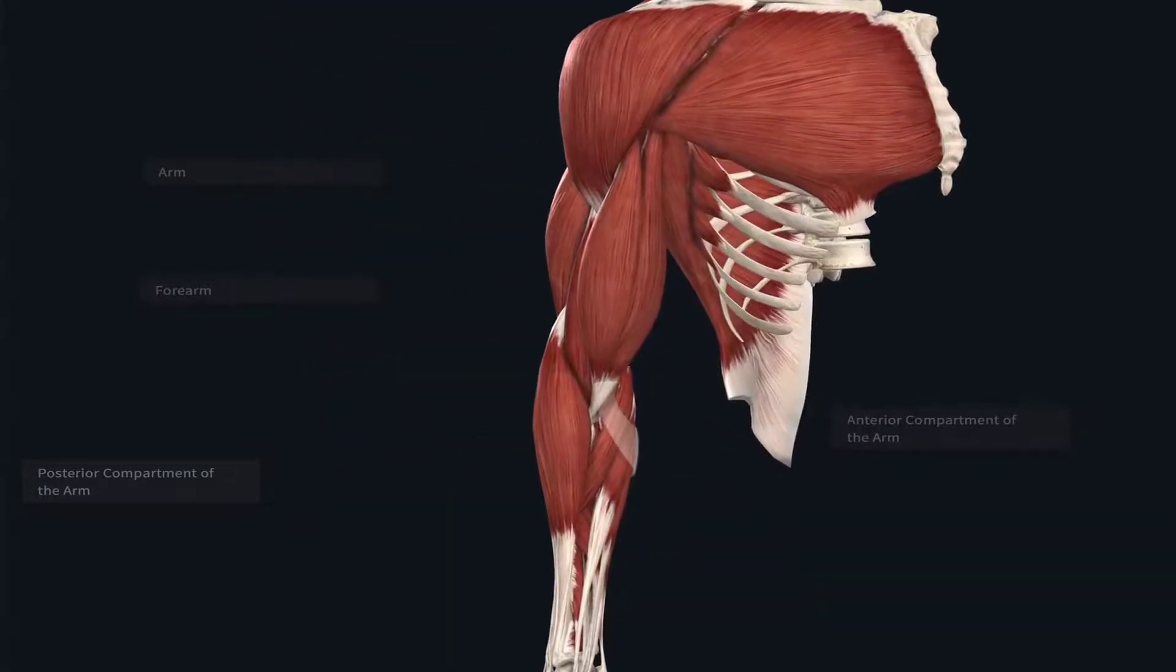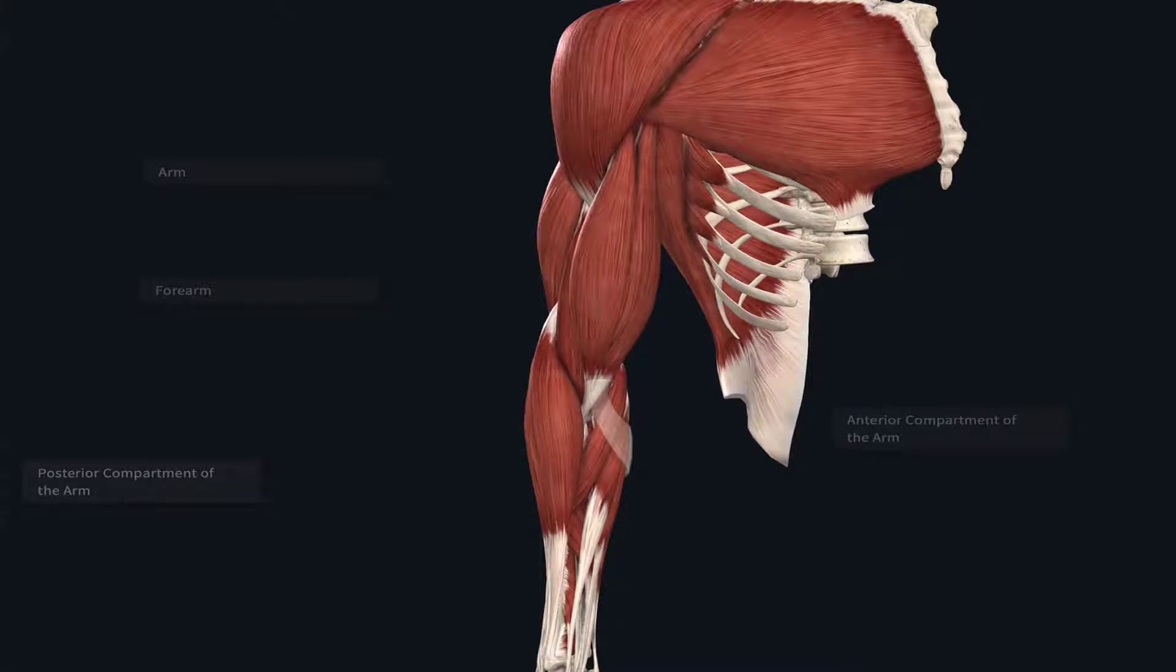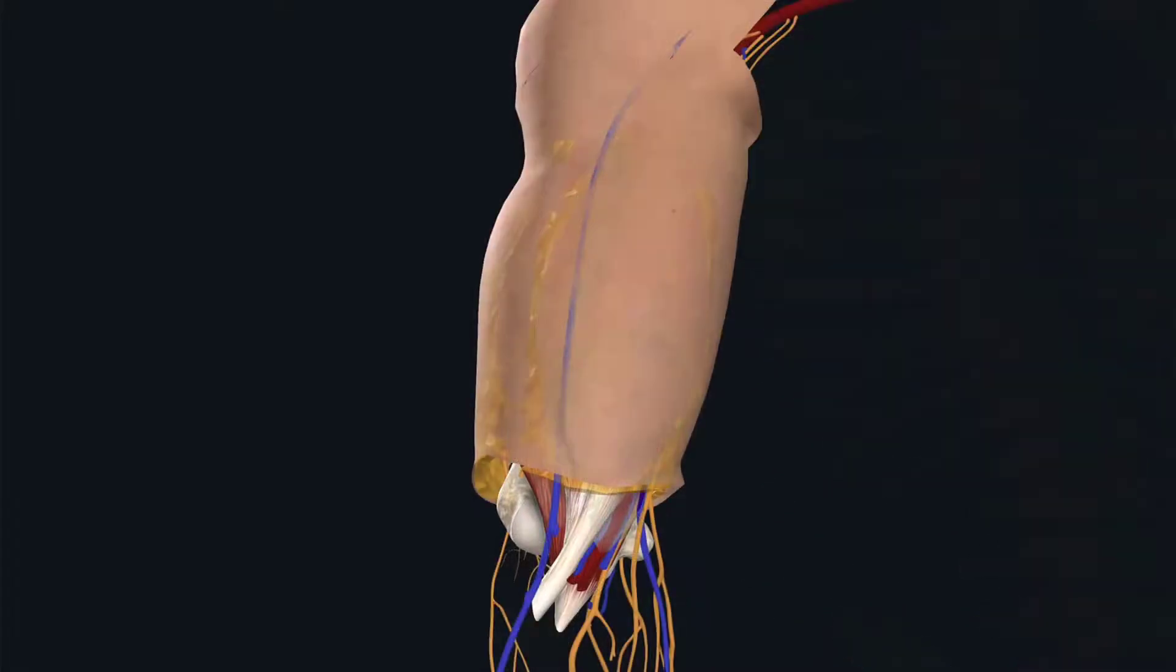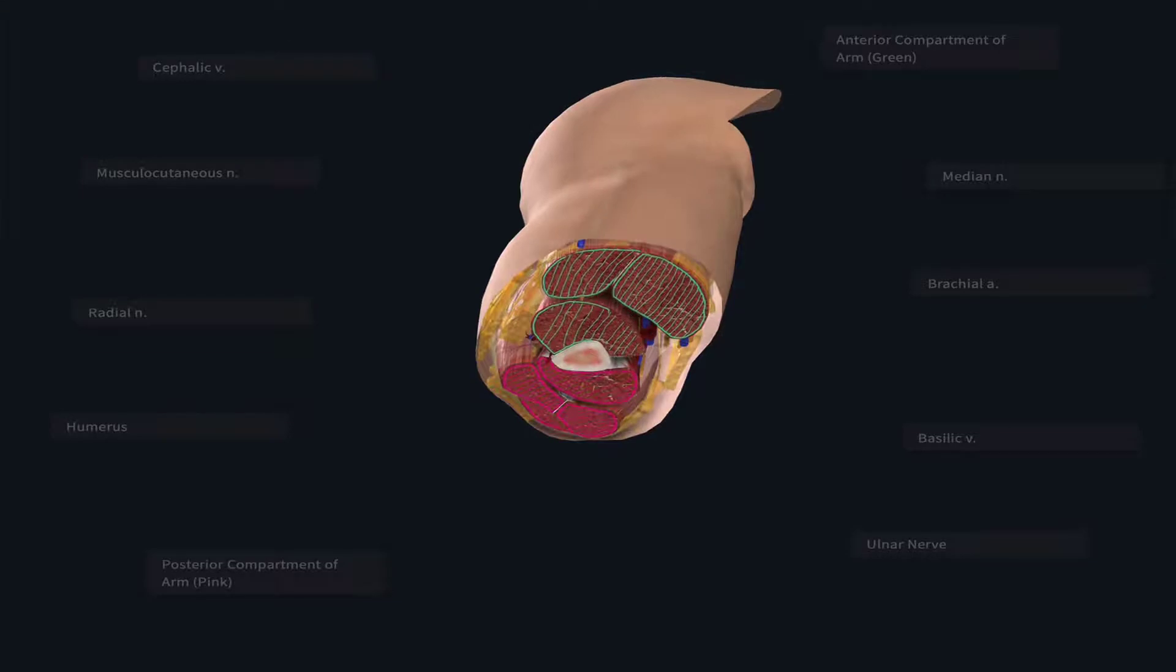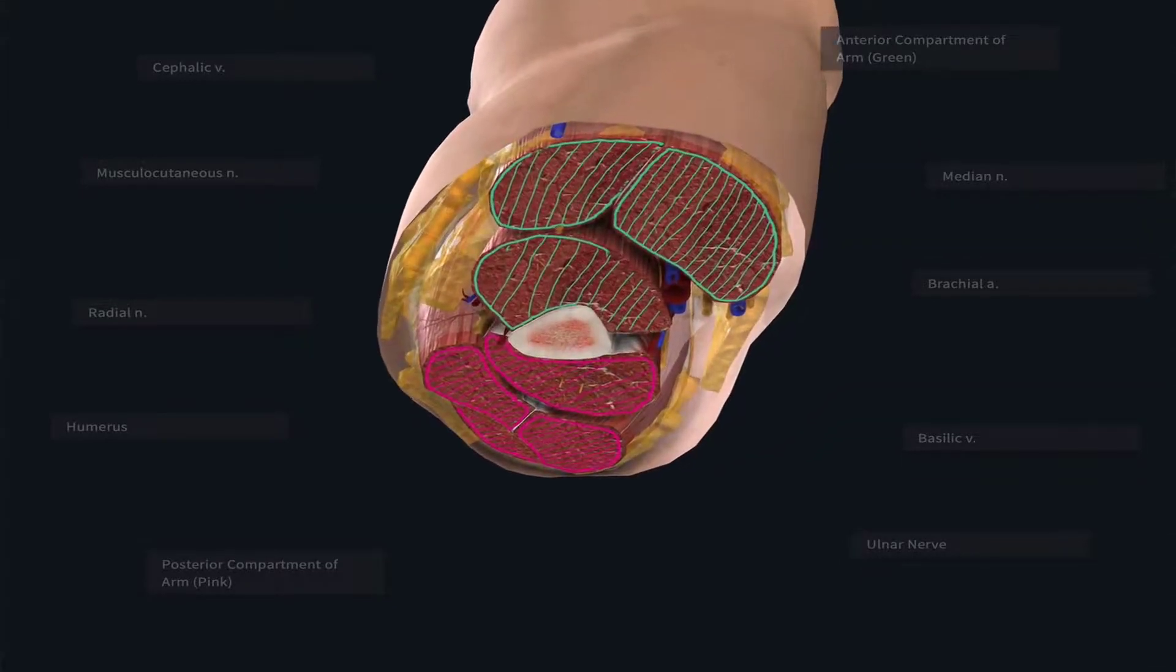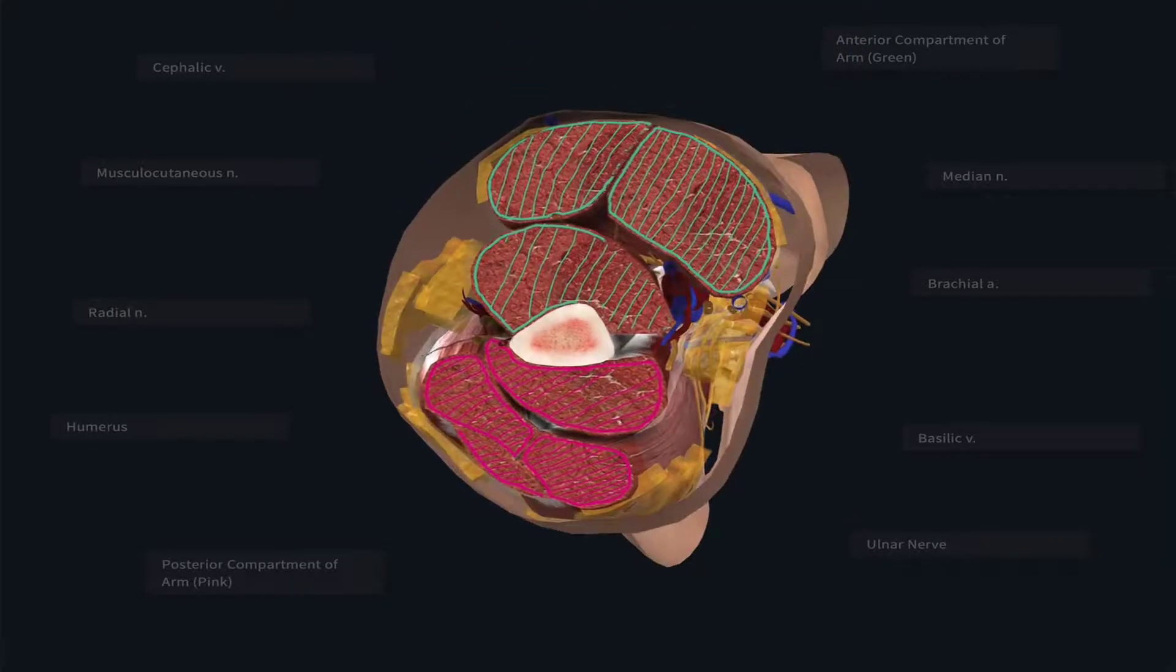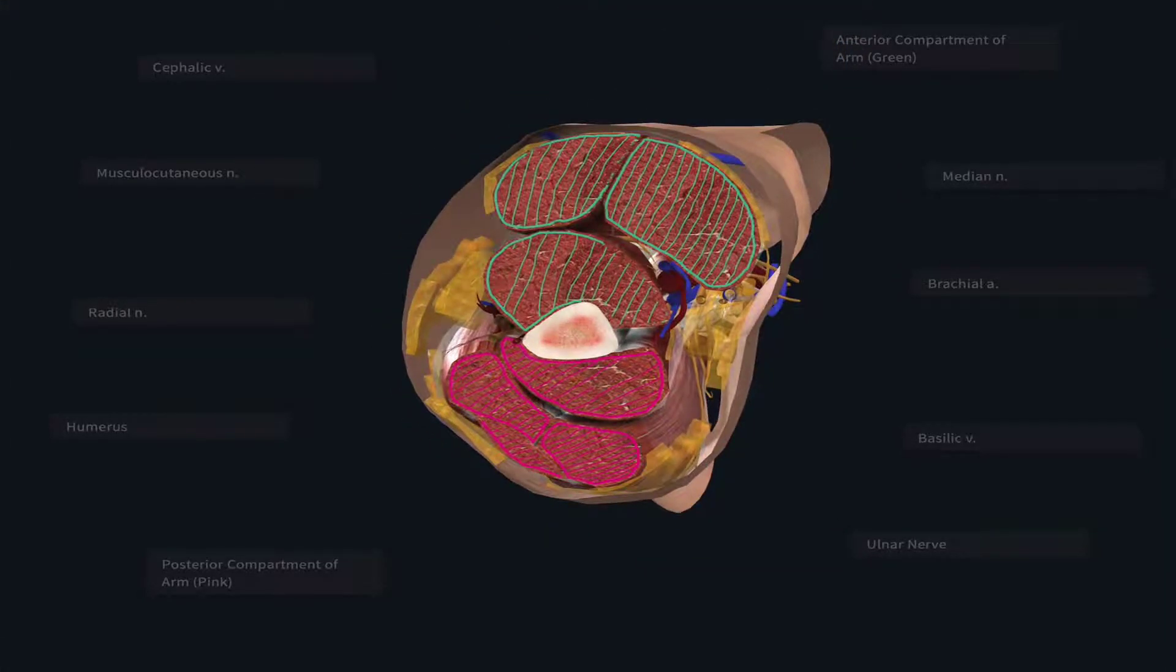It's often easiest to understand how these structures are organized by taking a closer look at the arm with a cross-sectional view in mind. So what we're going to do is take a look at a cut through the entire arm at the same time and discuss some of these structures in more detail. Typically, when we look at a cross-sectional cut of a region, we'll be looking at it from an inferior to superior perspective, because this is how diagnostic imaging is done.